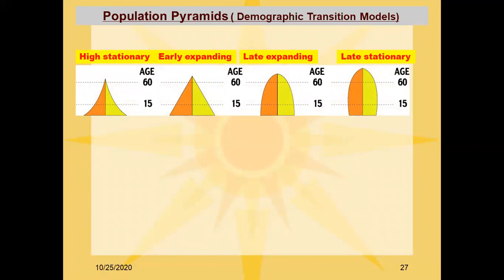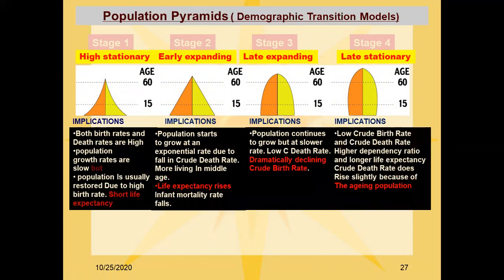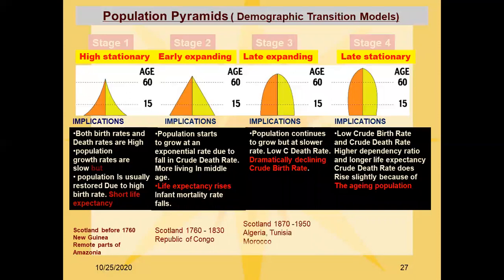According to demographic transition models: Stage 1 — Scotland before 1760; currently Guinea and other African countries. Stage 2 — Scotland from 1760 to 1830; currently the Republic of Congo. Stage 3, late expanding — Scotland from 1800 to 1950; currently Algeria, Tunisia, and Morocco. Stage 4, low stationary — Scotland, Japan, and USA.